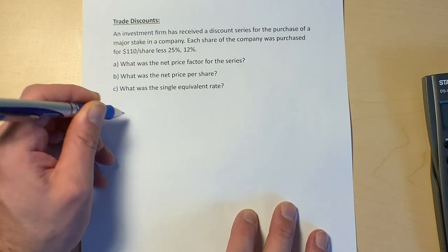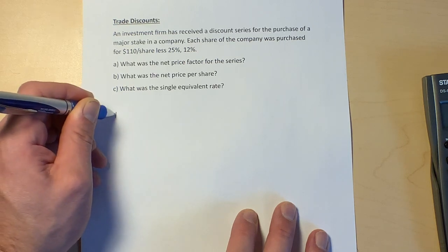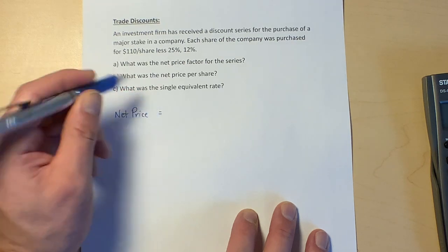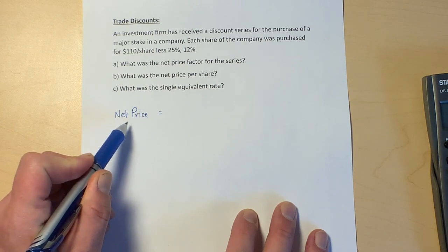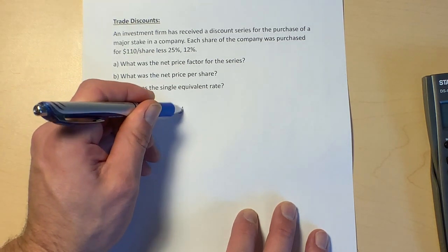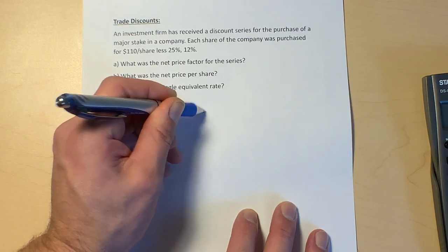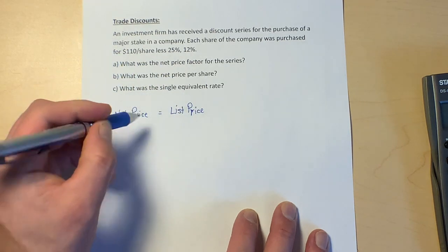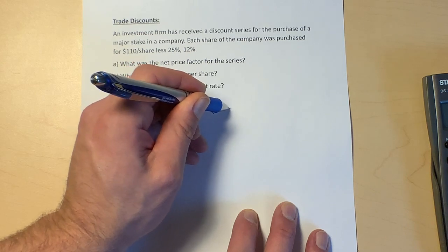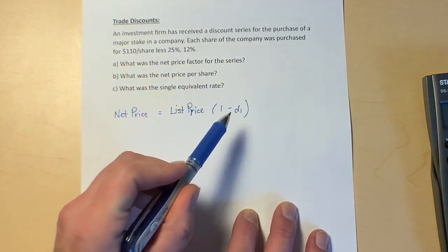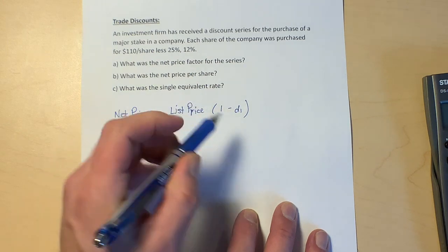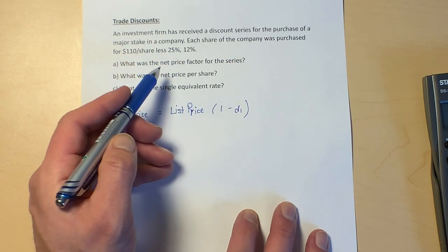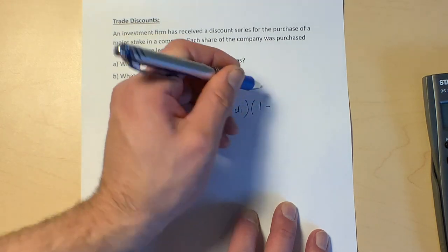I'll show you how to set these up. First, we'll take the net price. The net price is going to equal the list price. List price means the price on the price tag—here, $110. Then we're going to say one minus the first discount, so I'm just calling it d1, and we're going to express that number as a decimal, so 25% is going to be 0.25. And then we'll multiply that by one minus the second discount.